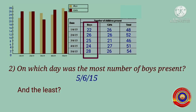And the least — we have to find out on which day was the least number of boys present. Look at the number of boys column. Yes, it was on 1st June 2015, and the number of boys present on that day is equal to 22.